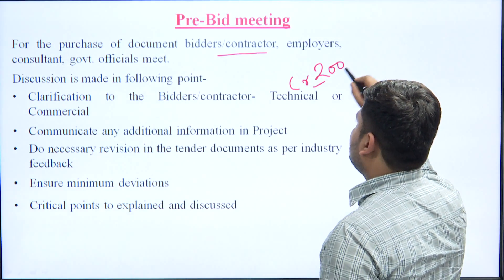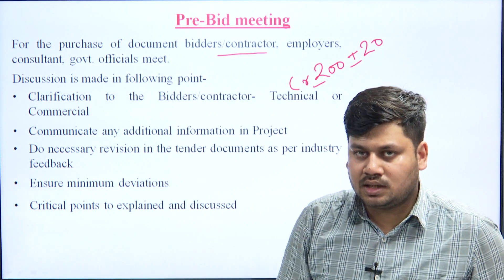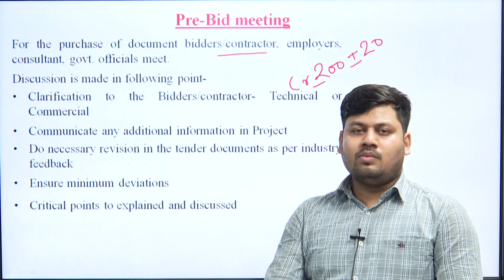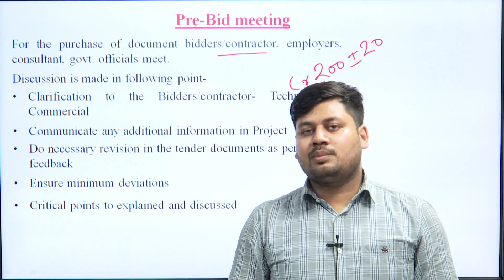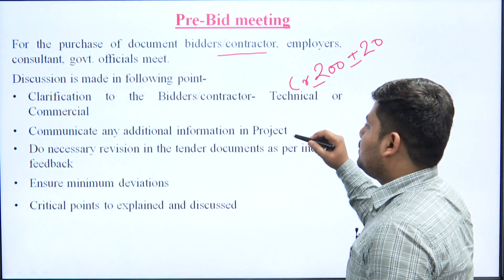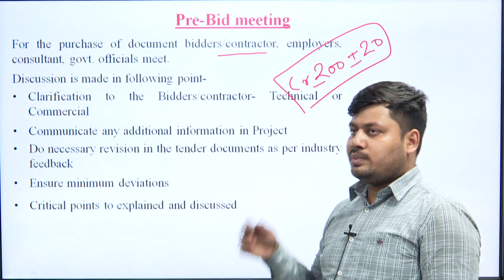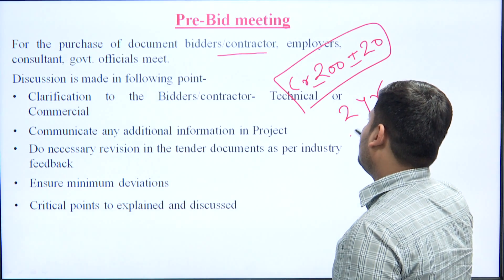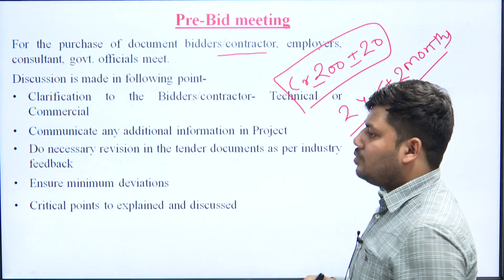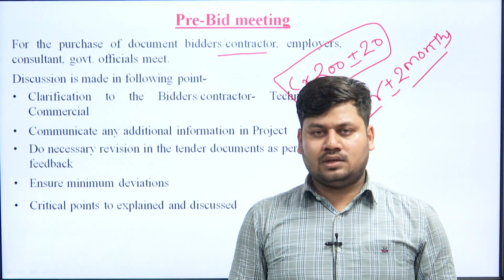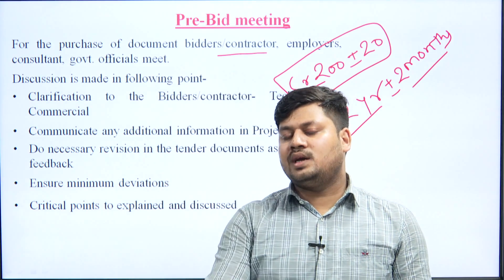If the deviation is 10%, the project cost should not exceed 220 crore and should not go below 180 crore. A minimum deviation is fixed. Similarly for time — if the project duration is 2 years, a deviation of plus 2 months is allowed, meaning the project cannot extend beyond 26 months. If it does, a penalty may be charged.